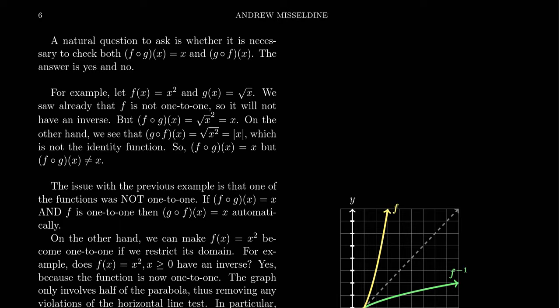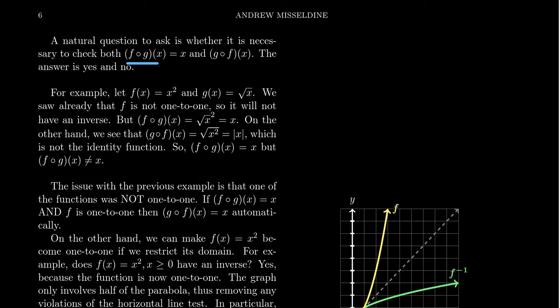A very natural question to ask is, is it really necessary to check both directions when you have a potential inverse function? Do you have to really check f composed with g and g composed with f? Well, the answer to this question is really yes and no. And let me kind of explain the caveat here.